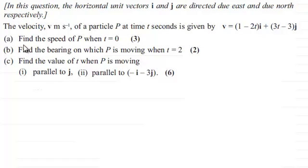And we've got to find for part A the speed of p when t equals 0 for 3 marks. And then in part B find the bearing on which p is moving when t equals 2 for 2 marks. And for part C find the value of t when p is moving first of all parallel to j, and then in the second part here parallel to the vector minus i minus 3j for 6 marks.